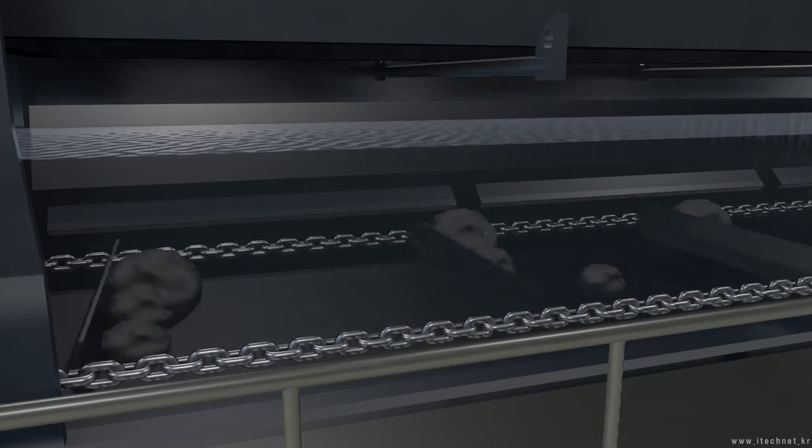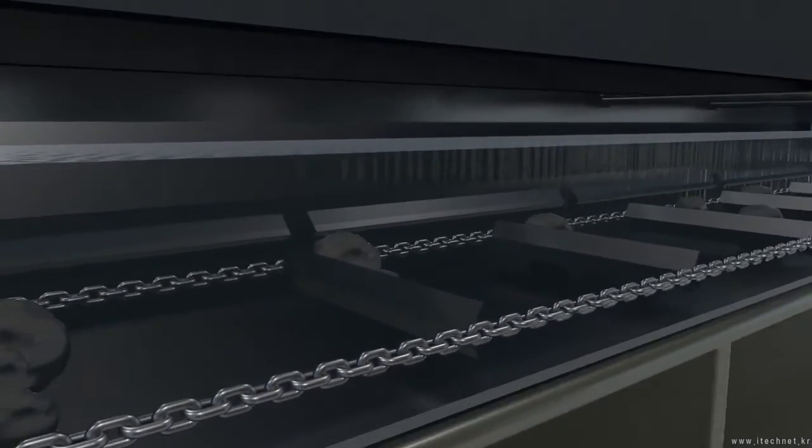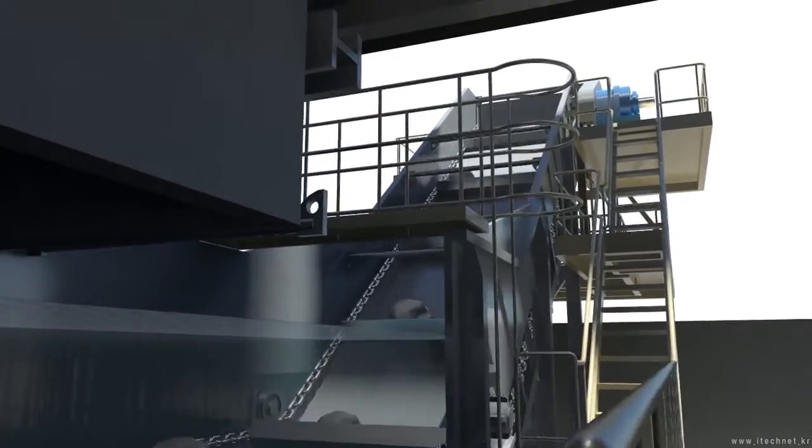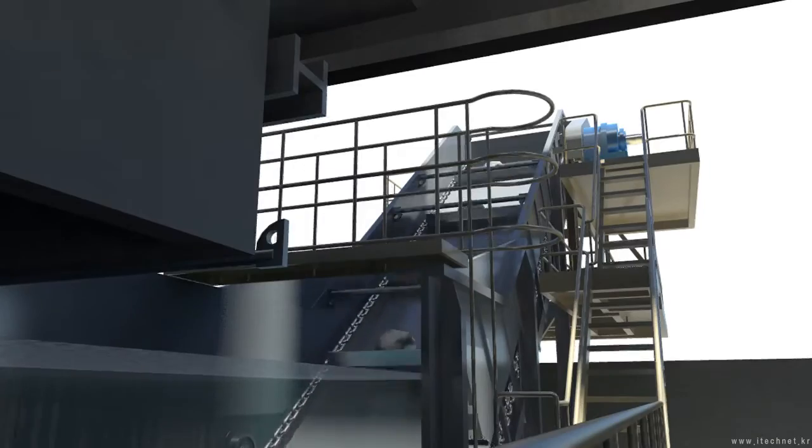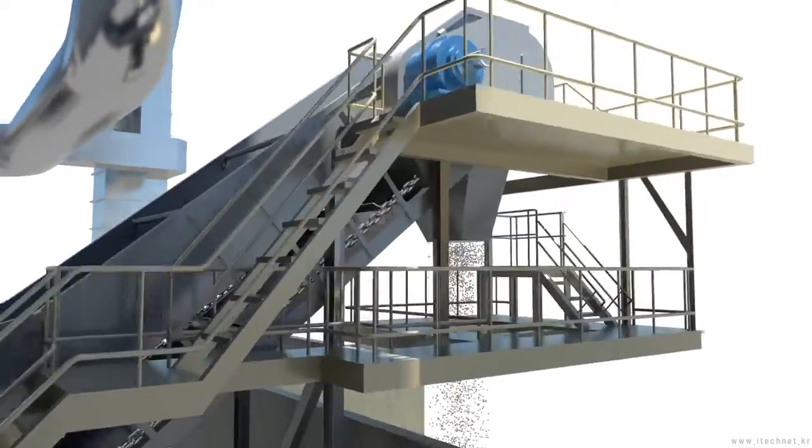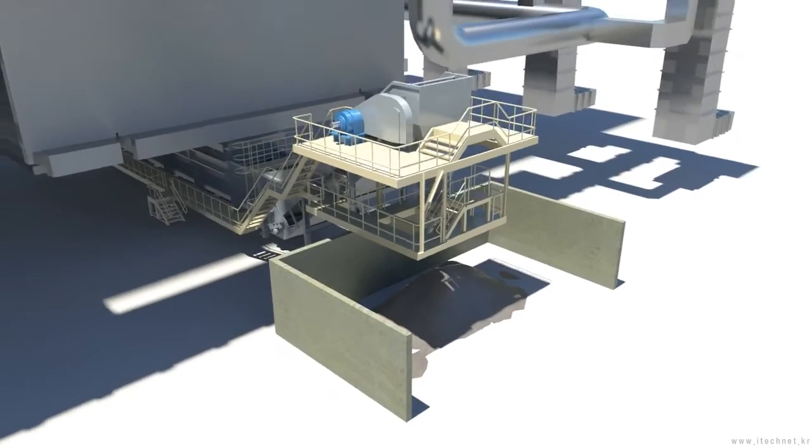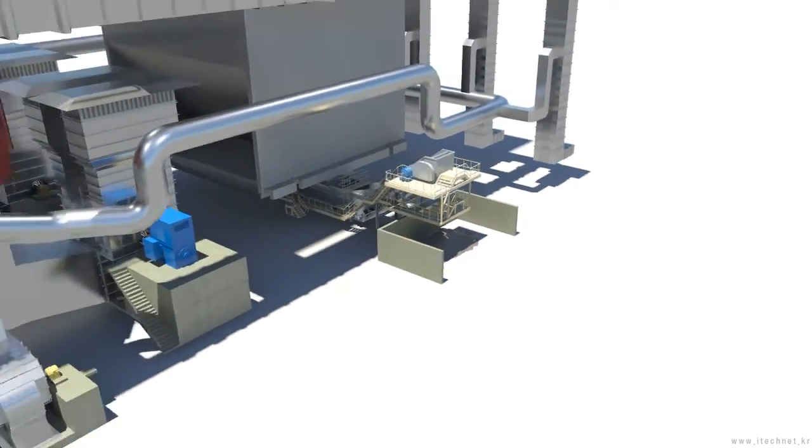The bottom ash which is sunk underwater is transferred to the clinker crusher by drag chain conveyor in water. The crushed ash which is crushed in the clinker crusher is dropped down to the bottom ash bunker and disposed to the trucks manually which is being carried away periodically.